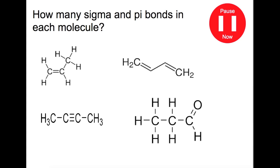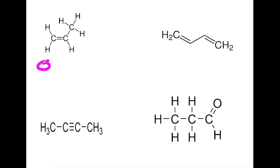You're to calculate how many sigma and pi bonds you have within each molecule. Pause the video now, give these a go, and then come back to see the answers. We're looking at propene. Sigma bonds are your single bonds, and also one of the double bond. So counting them up we have eight sigma bonds. And the other one of your double bond is your pi bond, so we've got one pi bond present.